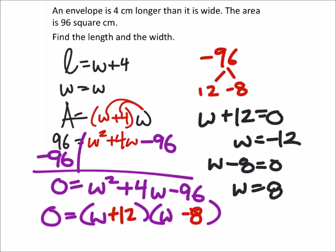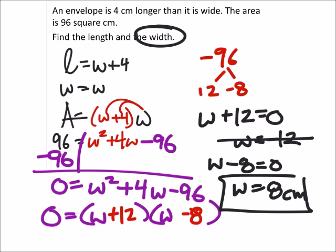Now we don't usually measure things in negatives, so the w equals negative 12 is no good. Looks like the width is just 8 centimeters, which we should be able to check. If the width is 8 centimeters and the length is 4 centimeters longer, then the length should be 12 centimeters.